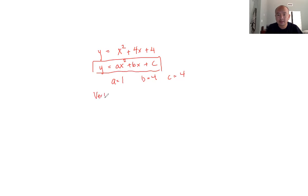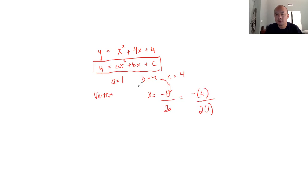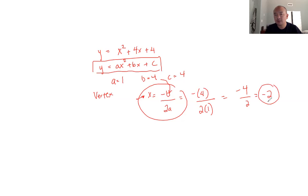So a is equal to 1, b is equal to 4, and c is equal to 4. When y is by itself and everything is on one side of the equal sign, those are your a, b, and c values. So what we're trying to do is find the vertex. They give you this formula: x equals negative b over 2a. So we plug these numbers in — negative 4 over 2 times 1 — because b is 4 and a is 1. So that equals negative 4 over 2, which equals negative 2. This formula tells you the x value of the vertex.